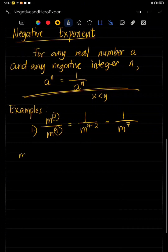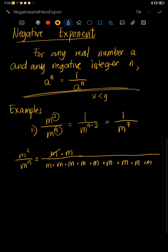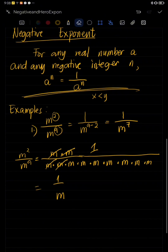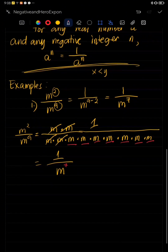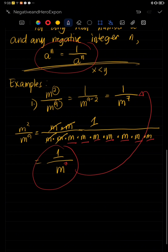If we solve this manually, M squared is equivalent to M times M, while M raised to nine is nine M's multiplied together. If we divide this out, the two M's in the numerator cancel with two of the M's in the denominator, leaving seven M's remaining. So that is one over M raised to seven. The answer is the same, which is why we follow that law of exponents.